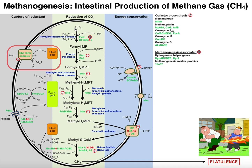We're going to start off with carbon dioxide and ultimately need to reduce that carbon dioxide down to methane. Most of these reactions are going to be successive reductions because carbon dioxide is the most oxidized form of carbon. First, CO2 is going to be ligated to MF, which is a coenzyme called methanofuran — a very strange cofactor that we will not see anywhere else. It is strictly involved in methanogenesis, and in fact most of these cofactors are strictly involved in methanogenesis, such as methanopterin or tetrahydromethanopterin.